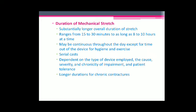Some studies advise the use of serial casts for mechanical stretching of tissues. Serial casts are devices where a cast is applied to the patient, and after a few days or weeks the cast is removed, the part is adjusted to a newer, greater range, and the cast is reapplied. The duration depends on the type of device employed, the cause, severity, and chronicity of the impairment, and patient tolerance. Longer durations are used for chronic contractures.